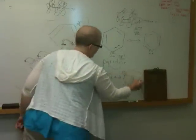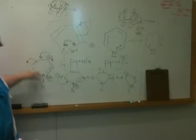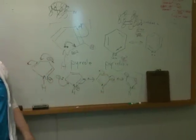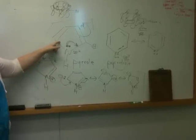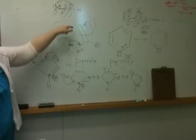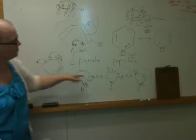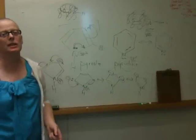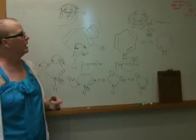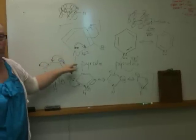The real structure for pyrrole is the hybrid of all five of those structures, the weighted hybrid. This is the most important form. The reason this is the most important form is it has no charge separation. Structures that have charge separation in them are less important.